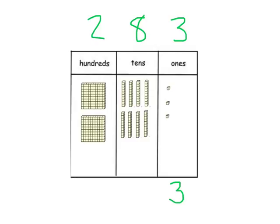In this number, eight is in the tens place. That means that I have eight groups of ten in the number. To count these, I would count by tens, because each one has ten ones: ten, twenty, thirty, forty, fifty, sixty, seventy, eighty. Eight tens means that eight is worth eighty.